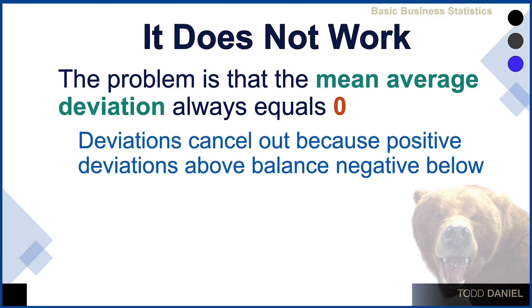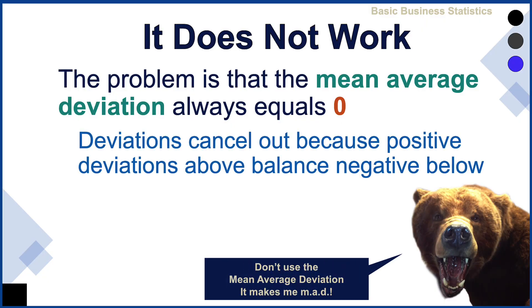And why is that? Remember that the mean is the mathematical center — it's the middle of the distribution. Scores above cancel out scores below; deviations above cancel out deviations below the mean. The mean subtracted from every raw score will always give us an average deviation of zero, making the mean average deviation completely useless as a measure of variability.